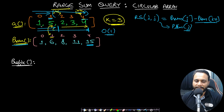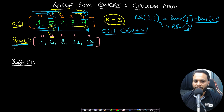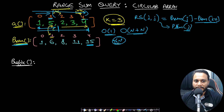With the precomputed prefix sum array, you can get any range sum in O(1). Since each query is O(1), finding results for all n indices reduces the time complexity to O(n), after O(n) preprocessing for the prefix sum. However, the array is circular, which is a caveat we need to handle.